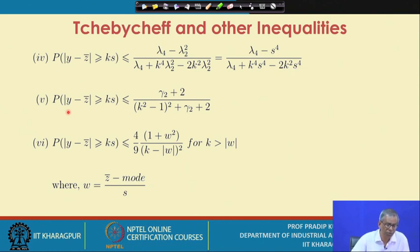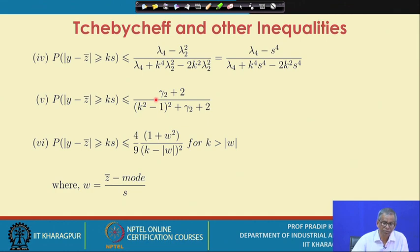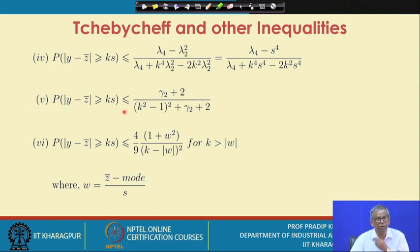The fifth expression is: P(|y − z̄| ≥ k·S) ≤ (γ₂ + 2) / [(k² − 1)² + (γ₂ + 2)], where γ₂ is the kurtosis of the distribution. To compute kurtosis you need m₄, so when an estimate of m₄ is available you can calculate γ₂ and use this particular inequality.